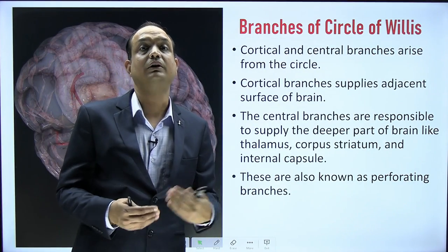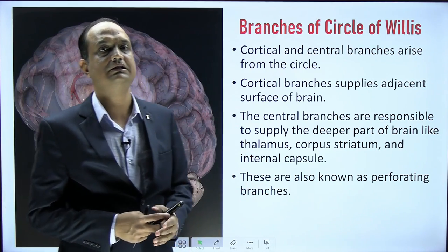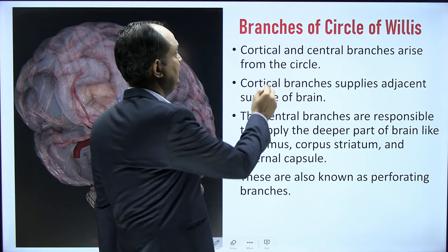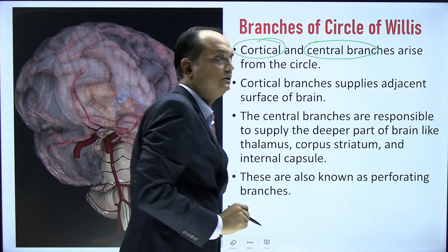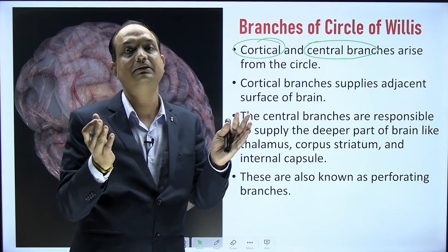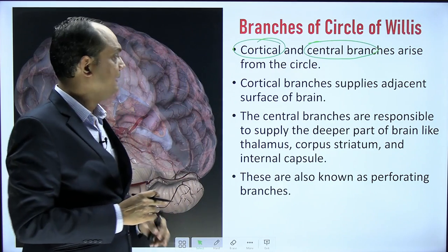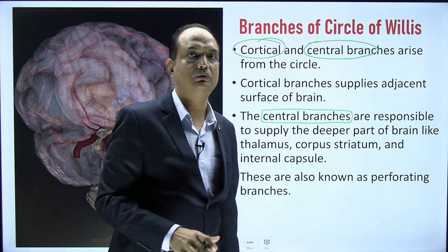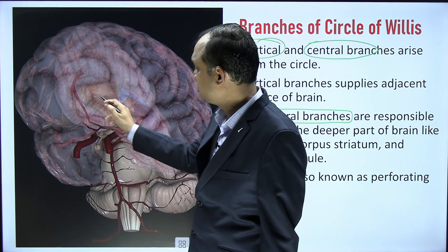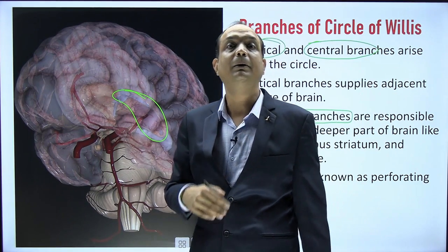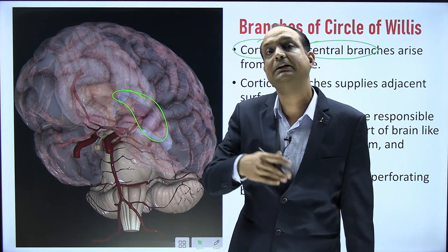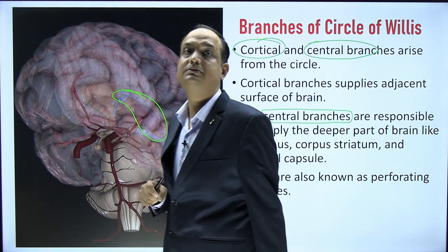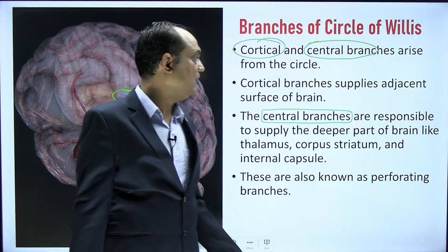The branches of the Circle of Willis are broadly divided into two types: cortical branches and central branches. Cortical branches are smaller and supply only the adjacent surface of the different lobes of the brain. Central branches are more important because they are responsible for deeper supply — reaching deeply placed areas like the internal capsule, corpus striatum, and thalamus, which are not superficially placed.